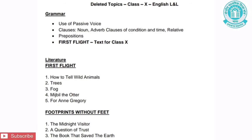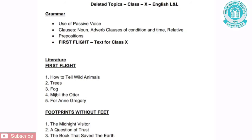Under Literature, from the textbook First Flight, five chapters have been removed: How to Tell Wild Animals, Trees, Fog, Mijbil the Otter, and For Anne Gregory. From the second textbook, Footprints Without Feet, three chapters have been removed: The Midnight Visitor, A Question of Trust, and The Book That Saved the Earth.